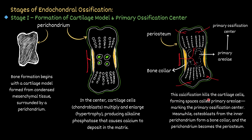Due to the deposition of calcium, the cartilage cells die, forming spaces called primary areolae — these mark the primary ossification center, from which bone formation starts. This calcification kills the cartilage cells, forming primary areolae that mark the primary ossification center.